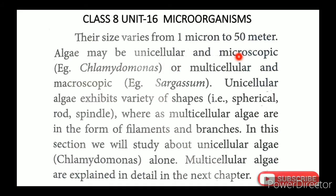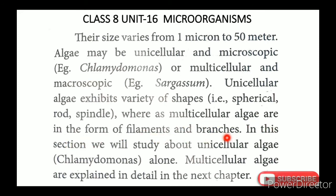Algae can be unicellular or multicellular — some exist as filaments or branches. In this section we will study unicellular algae such as Chlamydomonas alone; multicellular algae will be explained in detail in the next chapter.